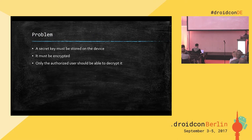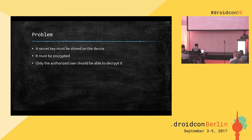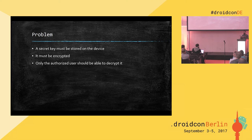In mobile banking applications, a one-time password (OTP) is commonly used for user authentication because of its security. To generate an OTP, the server-side and client-side applications exchange a secret key. This key must be stored on the device after activation for future OTP generation.